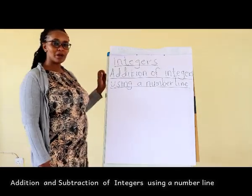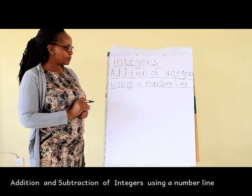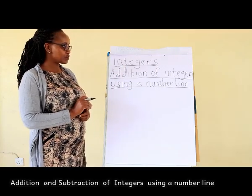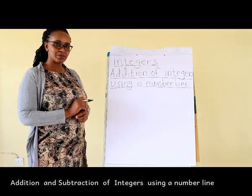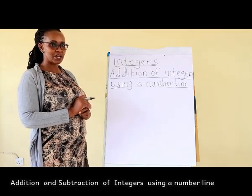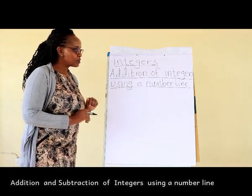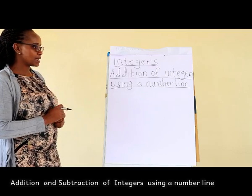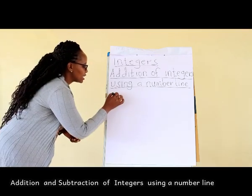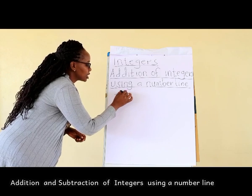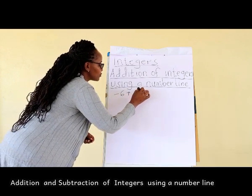Today we are going to talk about integers — specifically addition of integers using a number line, and also subtraction of integers using a number line. Let's start with the addition of integers using a number line. Let's consider negative 6 plus positive 5.